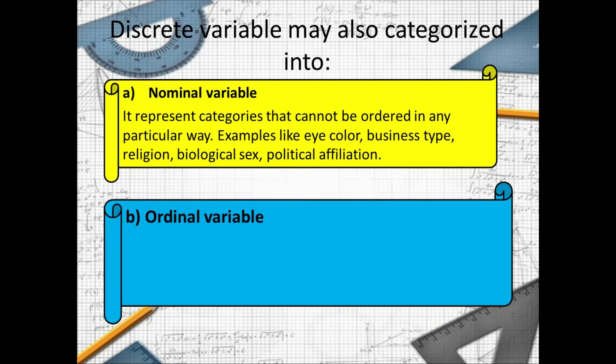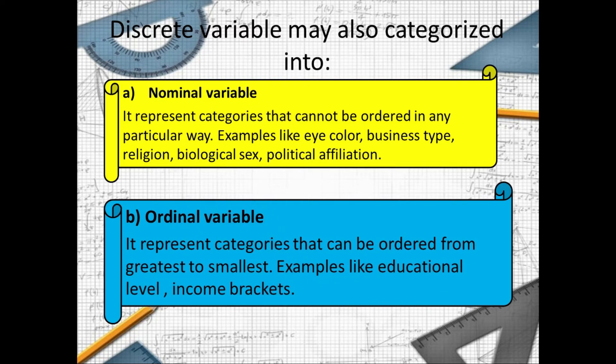Letter B: the ordinal variable. Ordinal variable represents categories that can be ordered from greatest to smallest.